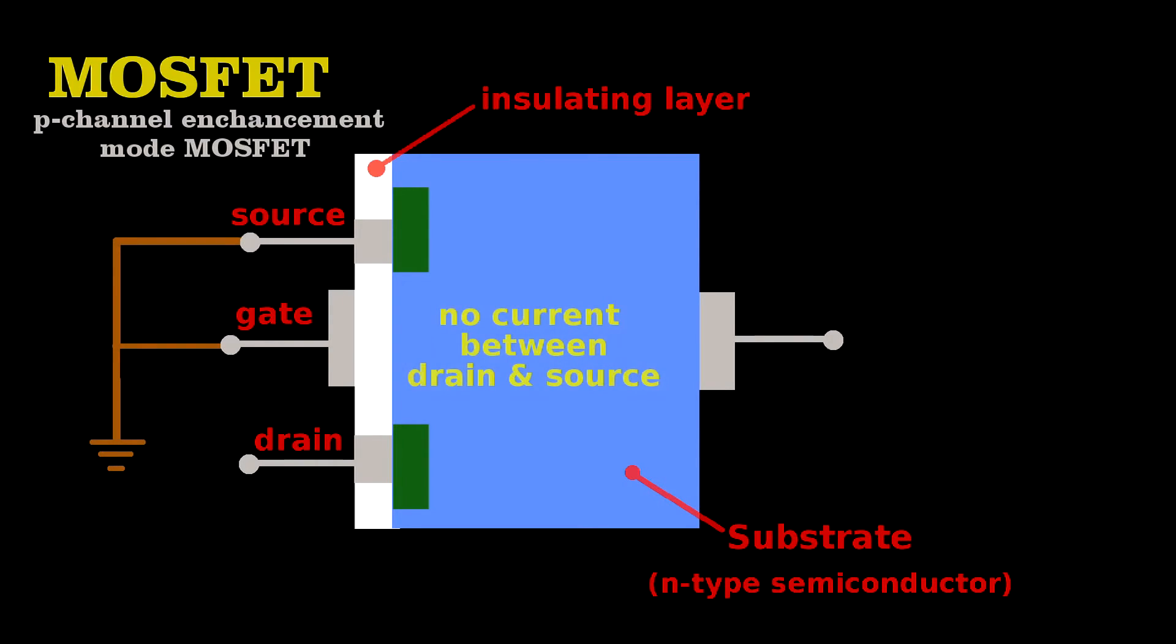When we create a voltage difference between the gate and the source, it generates a field through the insulating layer that draws the free positive charge carriers toward the gate, opening a channel that now allows current to flow.